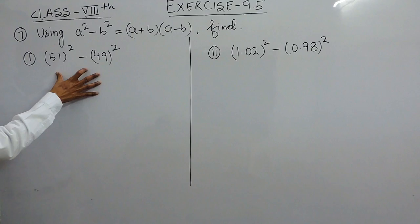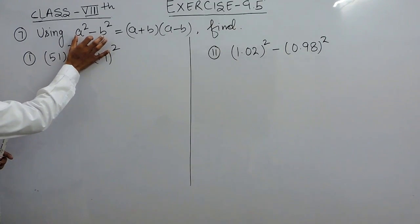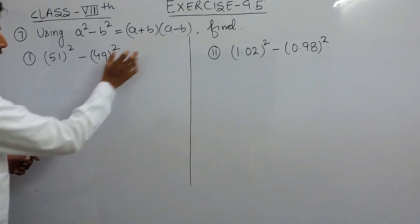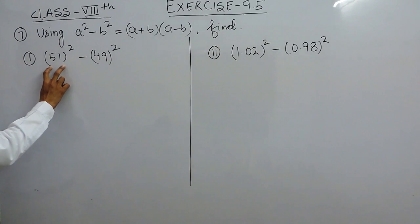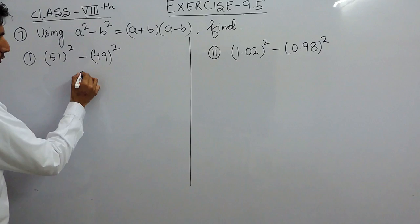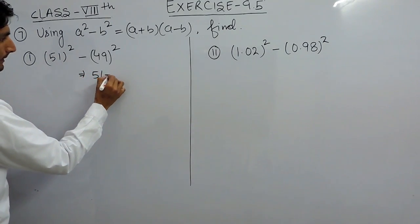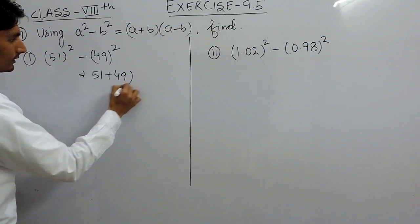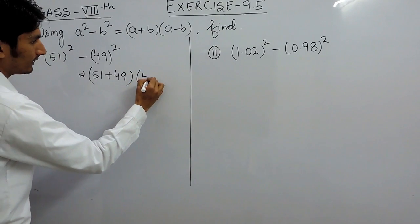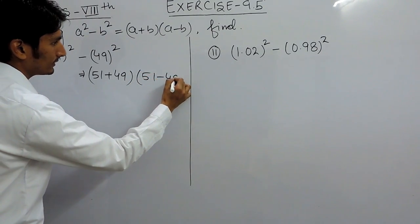These numbers are in this form, so we have to convert this into this form. This is a² minus b², so this should be equal to (a+b) and (a-b).